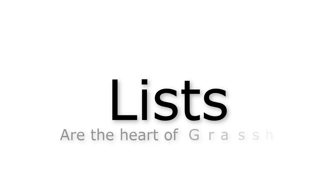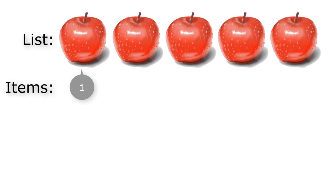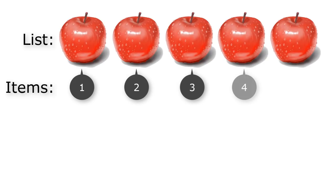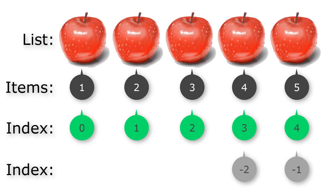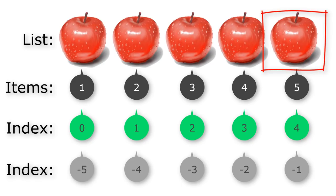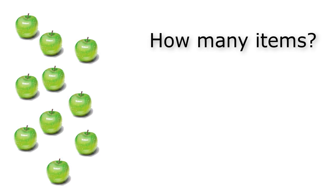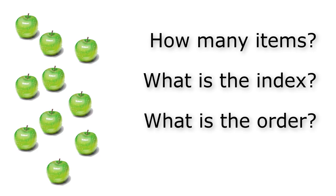Lists are the heart of Grasshopper. Take a look — we have five items, that's what we call a list item: 1, 2, 3, 4, 5. The index values are 0, 1, 2, 3, and 4. The last item of a list is index minus 1. So the first item is index 0 and the last is index minus 1.